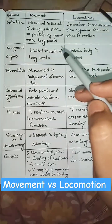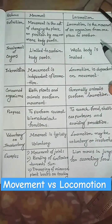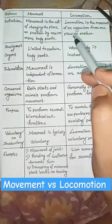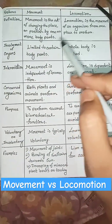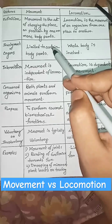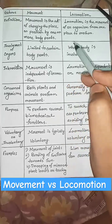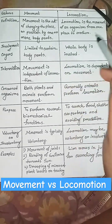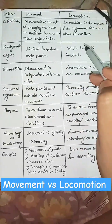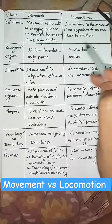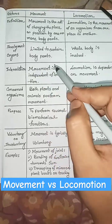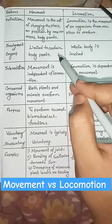Differences between movement and locomotion. Definition: movement is the act of changing the place or position by one or more body parts, but locomotion is the movement of an organism from one place to another. Involvement of organs: movement is limited to certain body parts, but in locomotion the whole body is involved.